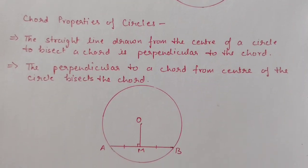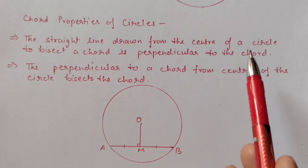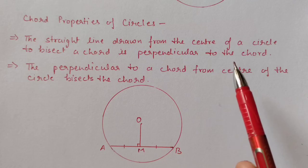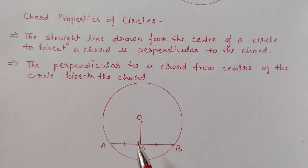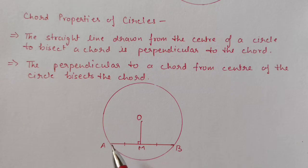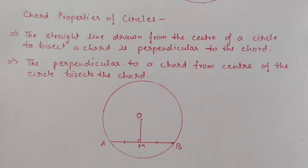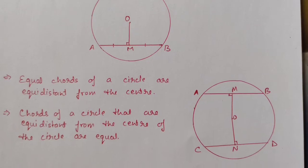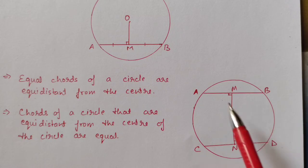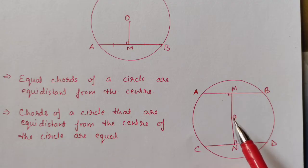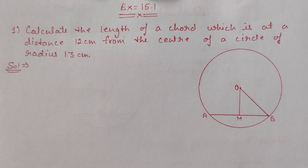We have a few chord properties to use in this exercise. The first property is that a straight line drawn from the center of a circle to bisect a chord is perpendicular to that chord — this angle will be 90 degrees. The reverse is also true: if the angle is 90 degrees, then the two halves AM and MB are equal. The second property is that equal chords of a circle are equidistant from the center.